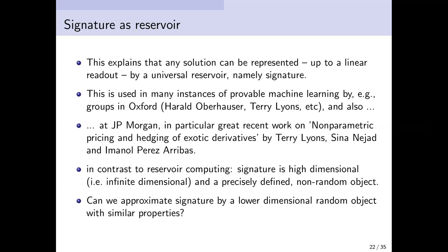The question then is: can we approximate signature by a lower-dimensional random object with similar properties — something that on one hand has random features and on the other hand is analytically attractive and easy to work with?